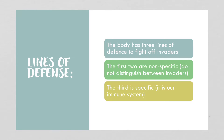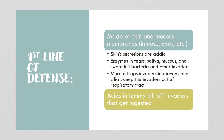Our body has three lines of defense to fight off invaders. The first two are non-specific — they don't care what the invader is, they simply sense an invader and block it. The third line of defense is specific, and that is our immune system.